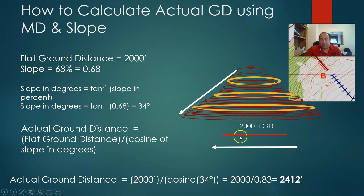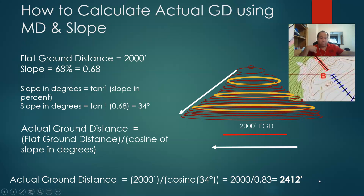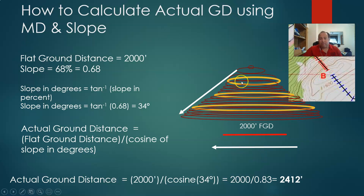So my flat ground distance measured on the map was 2,000 feet, but the actual distance is 2,412 feet — a difference of 412 feet. That's a big difference between 2,000 and 2,412. It's important that we understand how to calculate slope on a map so we can really account for it, understand where we are, and know the amount of effort we'll have to put in when we go into the field.